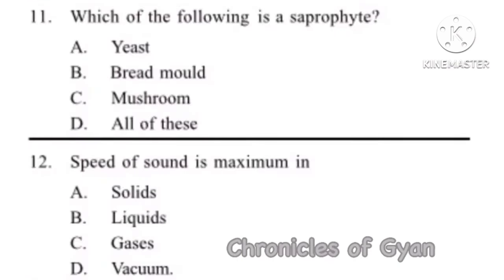Question 11: Which of the following is a saprophyte? Saprophytes are organisms which take their food from dead and decaying matter. For example, bread mold is a saprophyte. Mushroom and yeast are also saprophytes. So our correct option is Option D, all of these.